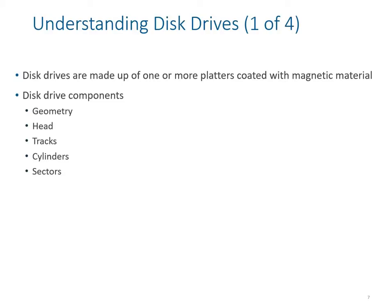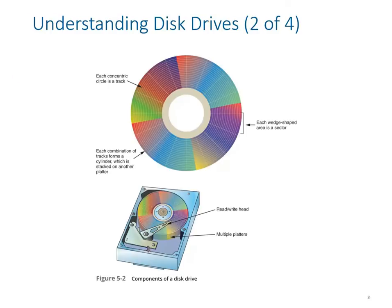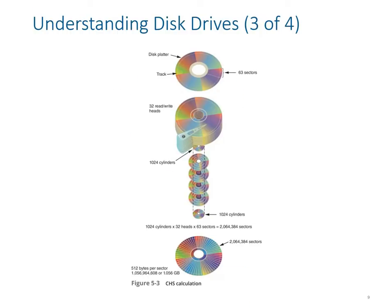Since data is constantly written at different locations — depending on reading, writing, and deleting activity — data becomes scattered at different locations on the disk, making it cluttered and harder to read. That's why we have defragmentation, which consolidates the data together and puts it in the right track to save space. The CHS (Cylinder-Head-Sector) calculation of hard drives shows the disk platter, tracks, and read/write heads, along with the total number of cylinders.